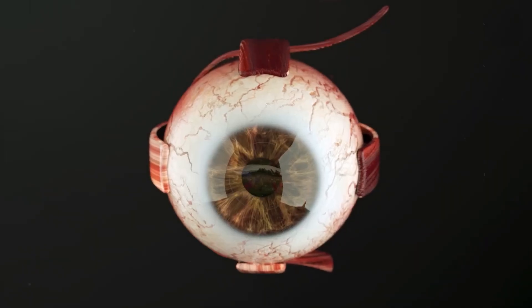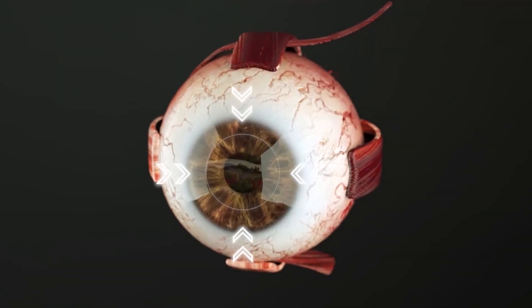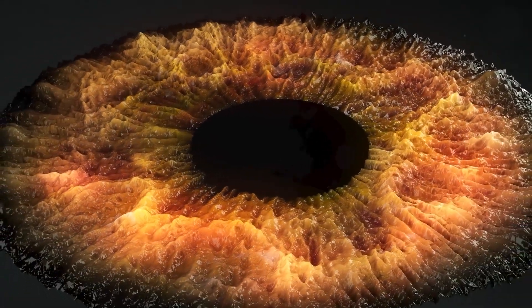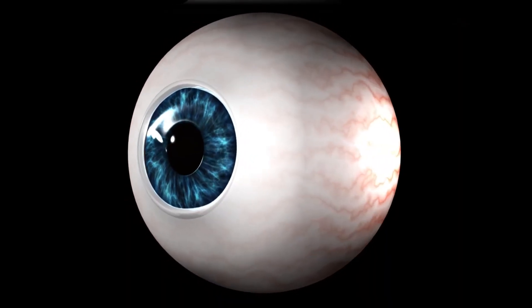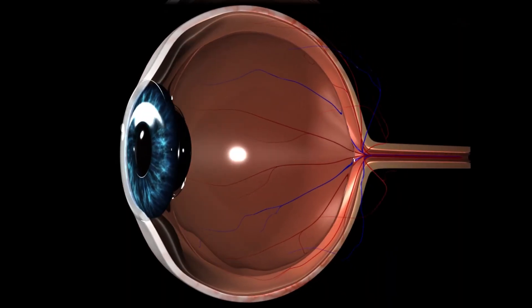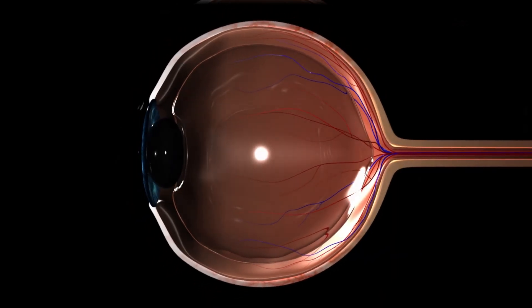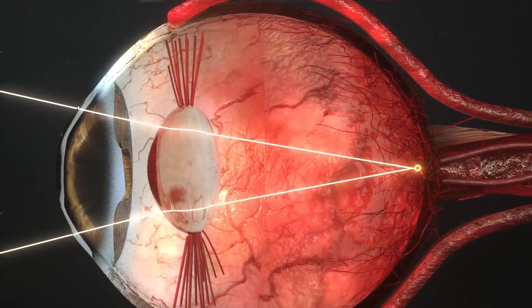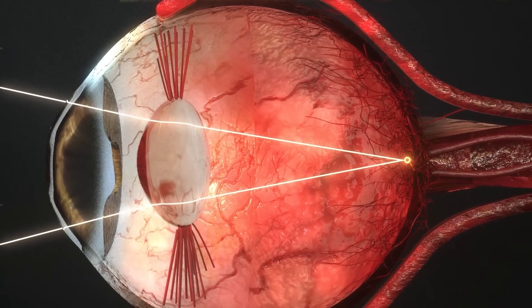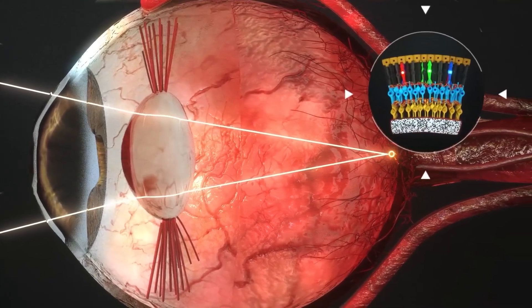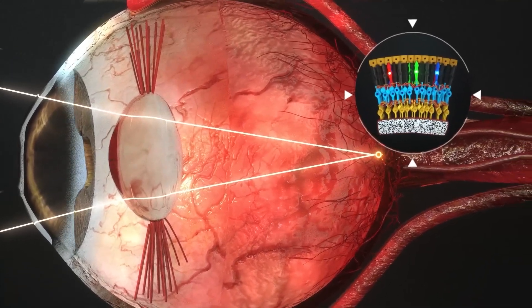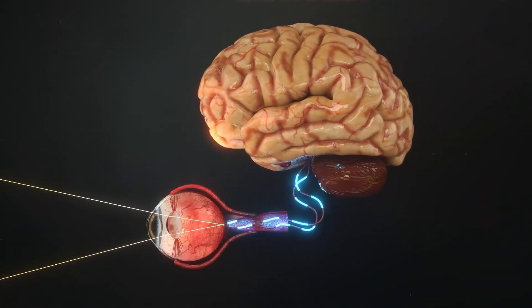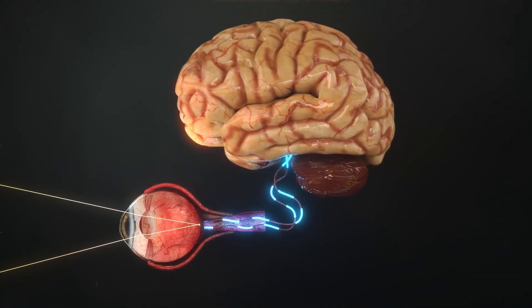Overall, the human eye is a marvel of biological engineering, allowing us to perceive the world in vivid detail. From the protective eyelashes to the intricate retina, each component works in harmony to provide vision. Understanding its anatomy helps us appreciate not only its complexity but also the importance of eye care. As technology advances, so does our ability to prevent and treat vision-related issues, making eye health a priority for a better quality of life.